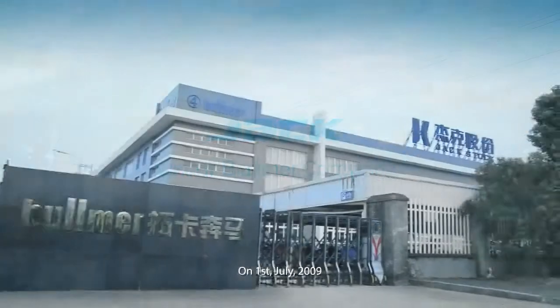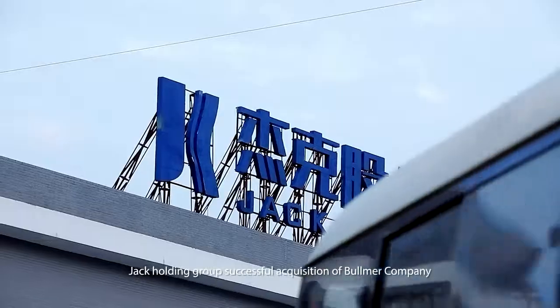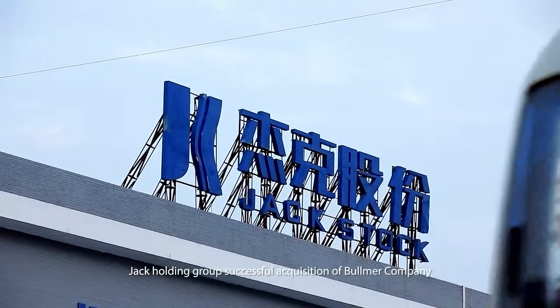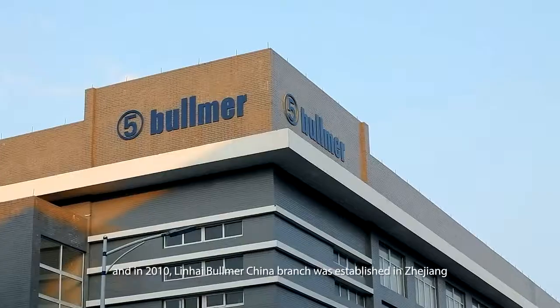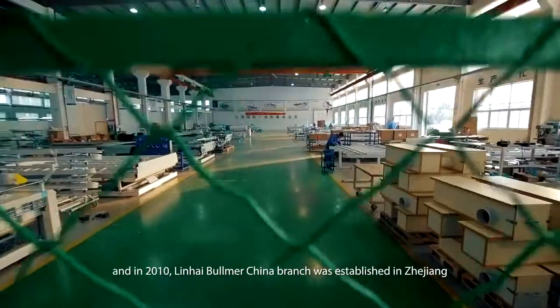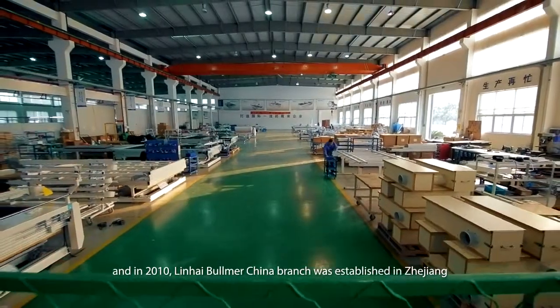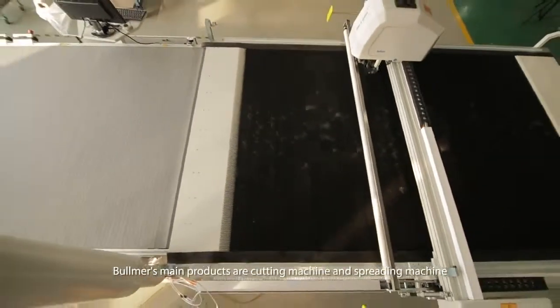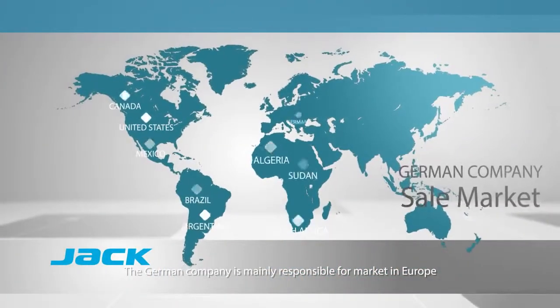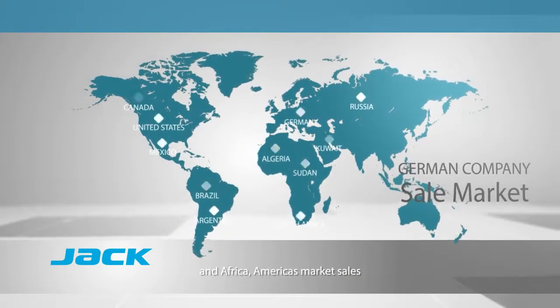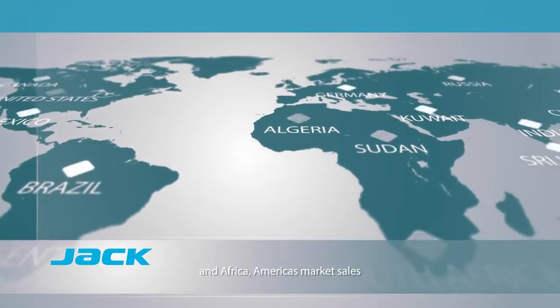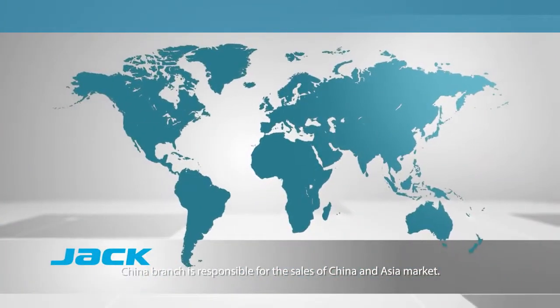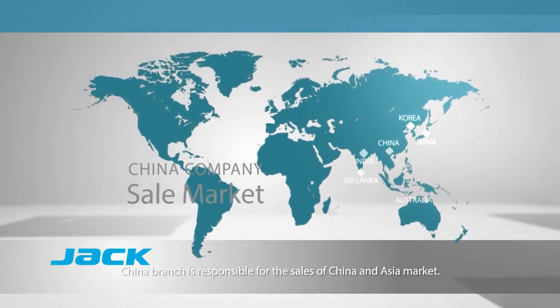On July 1, 2009, Jack Holding Group successfully acquired Bomer Company. In 2010, Linhai Bomer China Brand was established in Zhejiang. Bomer's main products are cutting machines and spreading machines. The German company is mainly responsible for marketing in Europe and Africa. China branch is responsible for the sales of China and Asia market.